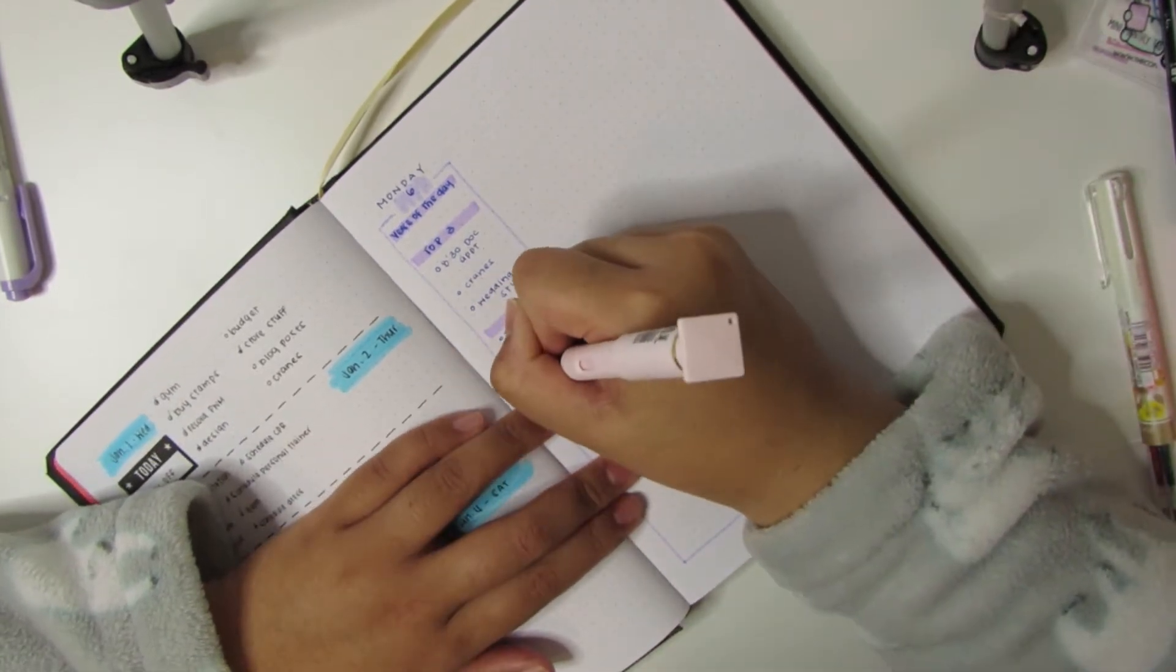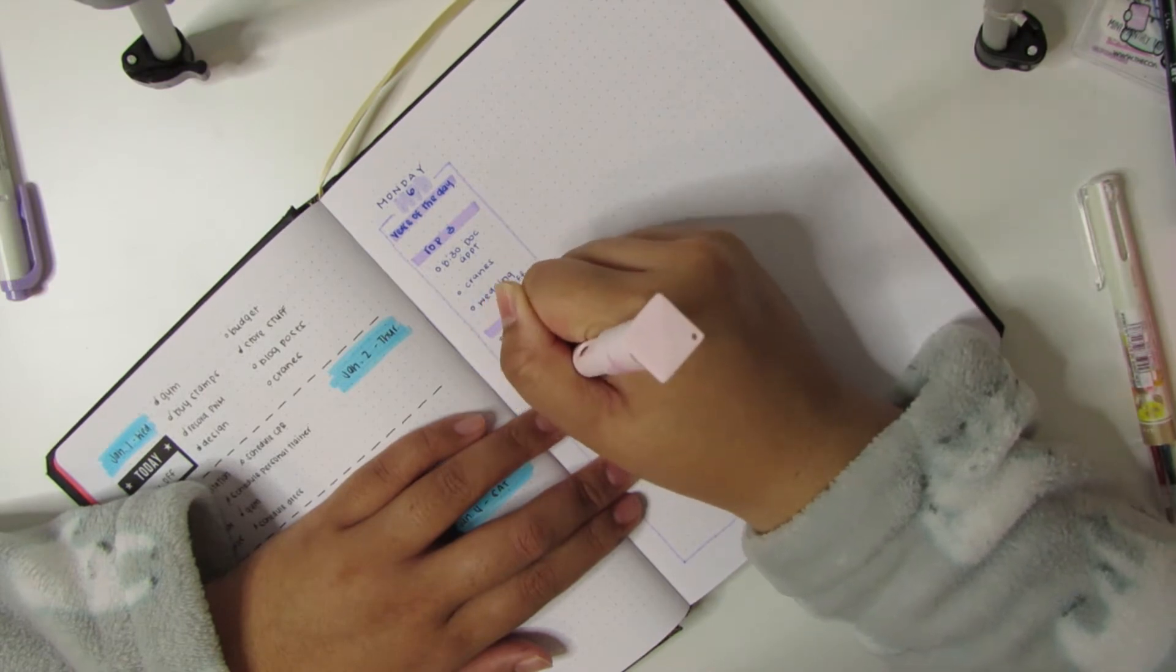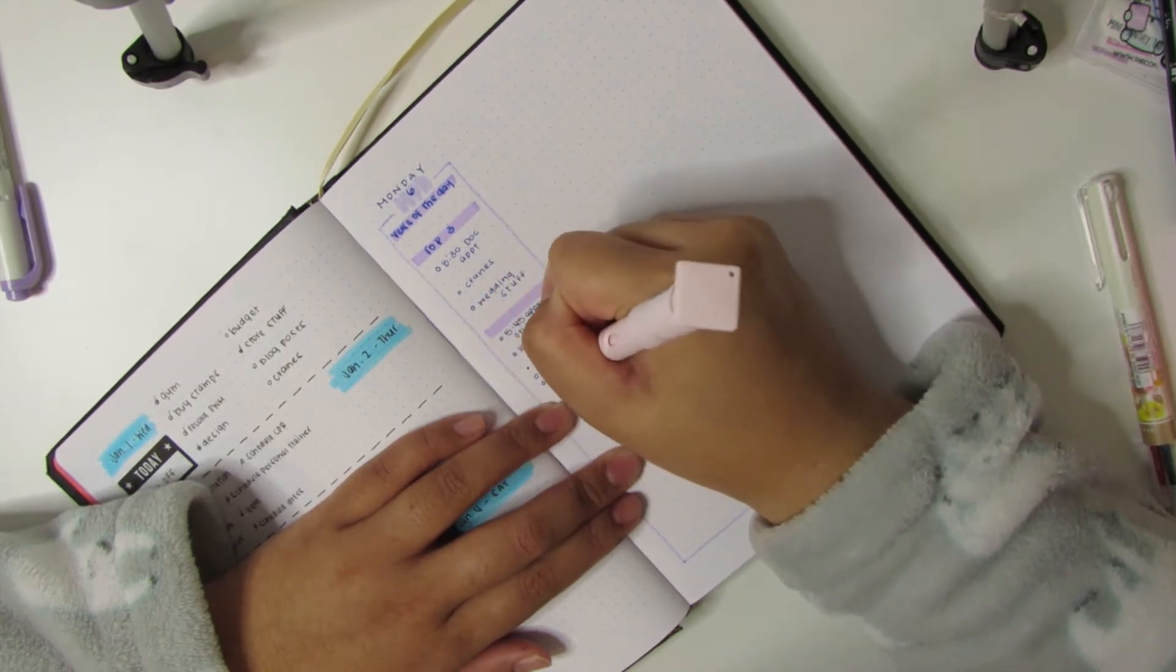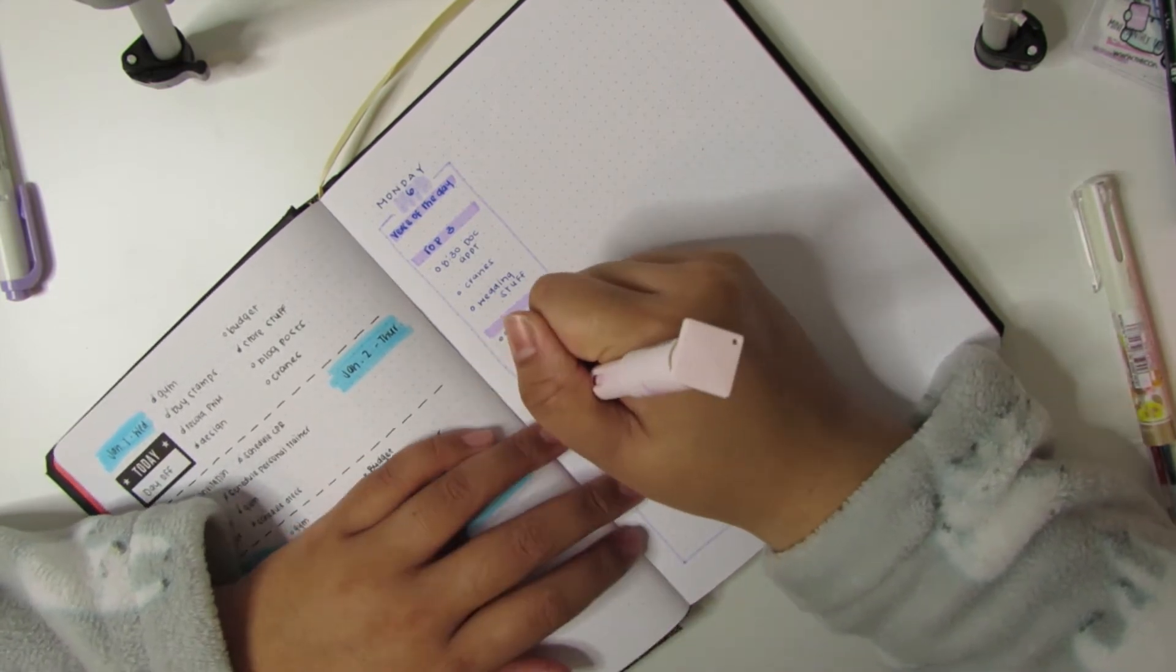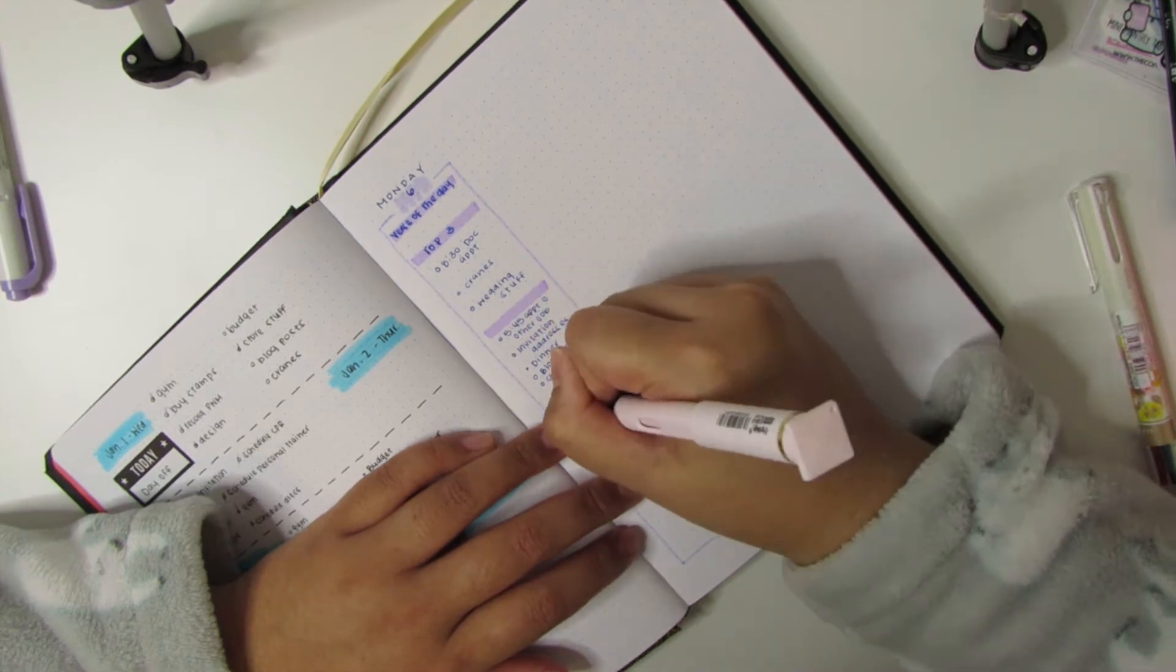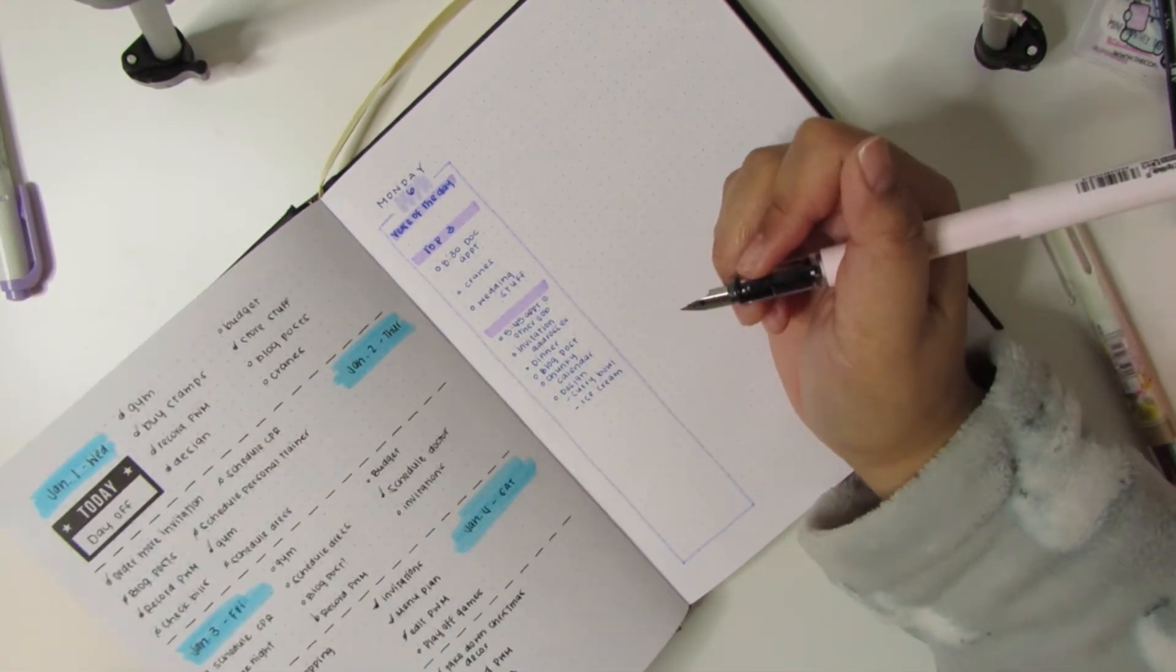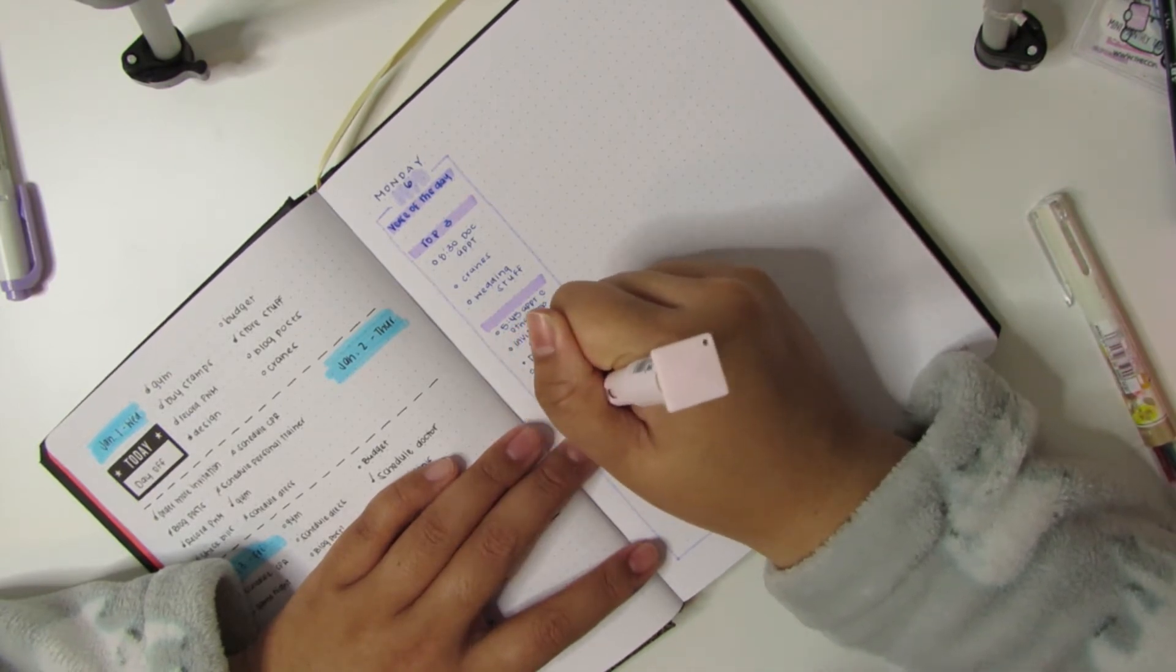This also incorporates anything that I need to do for the wedding, my shop, designing stuff. So that middle portion really is the catch-all place. And then I also mark my dinners, and I try to put in the verse of the day at the top as well.